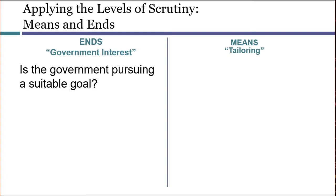For example, the food stamp program was intended to serve two interests. The interest most people are familiar with is to give subsidized food to people who could not otherwise afford it. But the other interest involved agricultural supply and demand. When the government issues food stamps, it in effect drives up demand for food, which ensures that farmers can receive a good price for their crops. This is why the food stamp program has always been administered by the Department of Agriculture rather than some other federal agency.